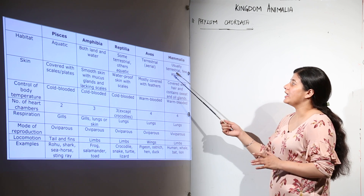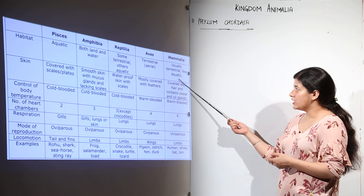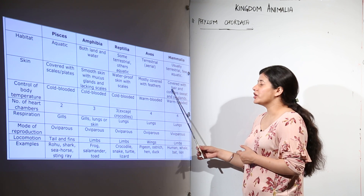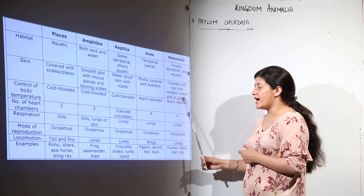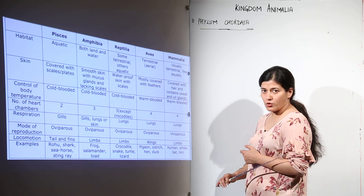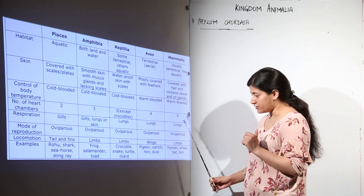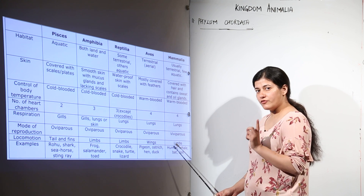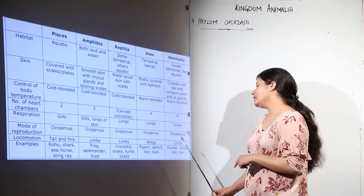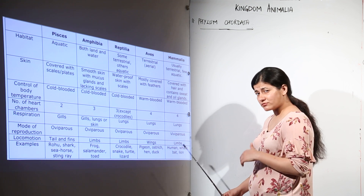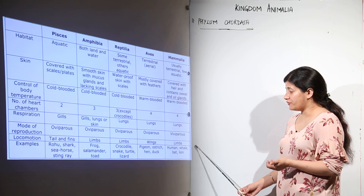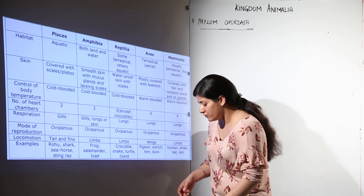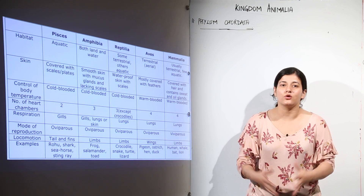Then we have Mammalia. They are usually terrestrial, except for a few such as whales and dolphins which are aquatic. The body is covered with hair and they contain sweat and oil glands. They are warm-blooded, the heart has four chambers, and respiration is by lungs whether aquatic or terrestrial. They are viviparous, with one exception — the platypus, which lays eggs. Locomotion is with limbs; they can be bipedal as in the case of human beings. Examples include human beings, whale, bat, and lion. With that, we end this long topic.